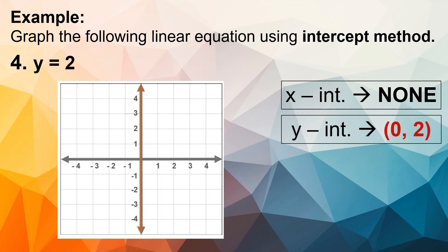Now let's graph. We look at the y-axis and locate positive 2. Just as with the x-intercept case we drew a vertical line so it would not intersect the y-axis, here with only a y-intercept, the line must not intersect the x-axis. So we draw a horizontal line. This will be the line of our linear equation.